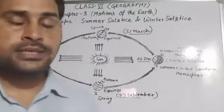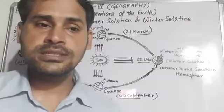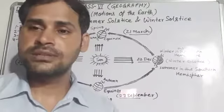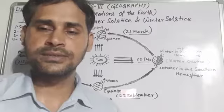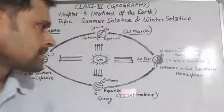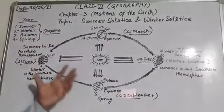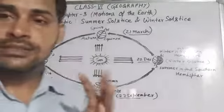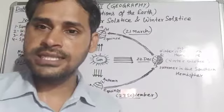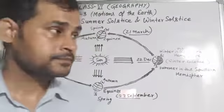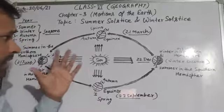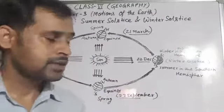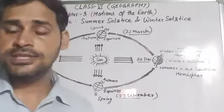As you know, seasons change due to the revolution of the Earth. A year is divided into four seasons: Summer, Winter, Autumn, and Spring. We will understand Summer Solstice with the help of this figure.